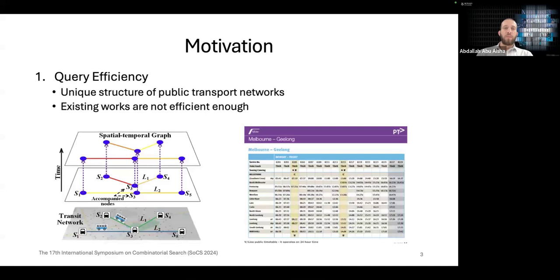At the same time, public transport networks have a unique structure compared to road networks where we have to handle the time dimension in addition to the space dimension. This results in existing works being not efficient enough in this field.